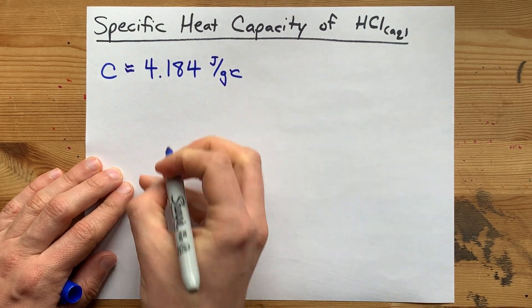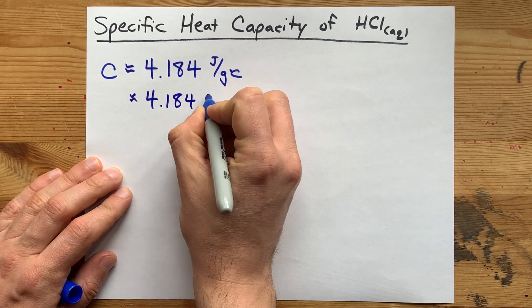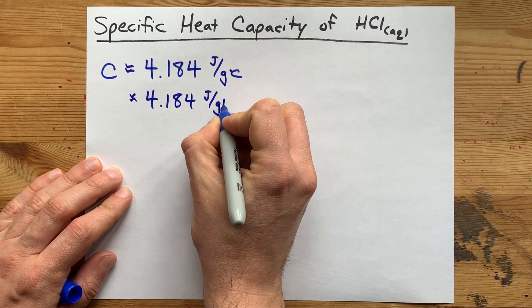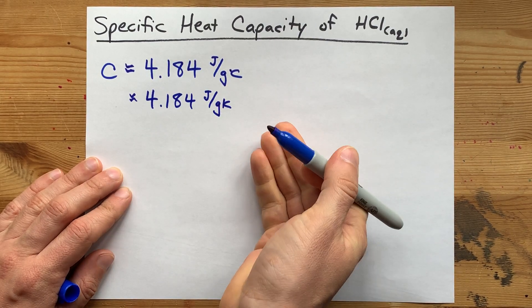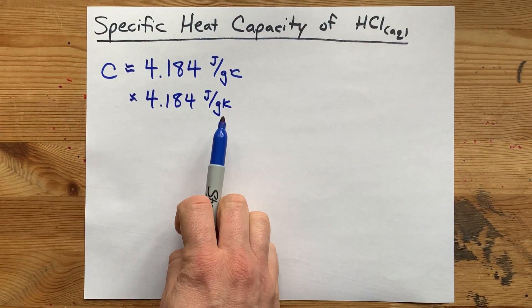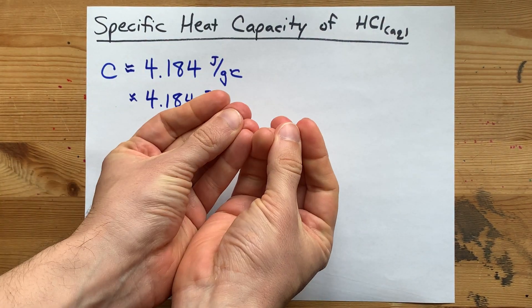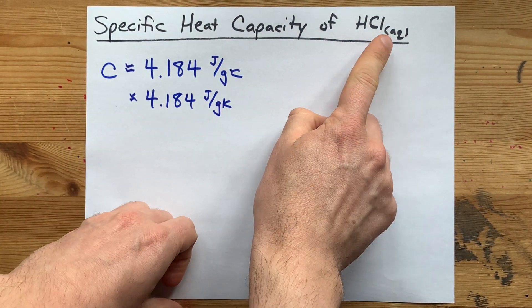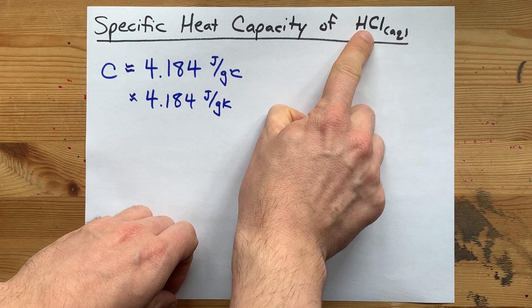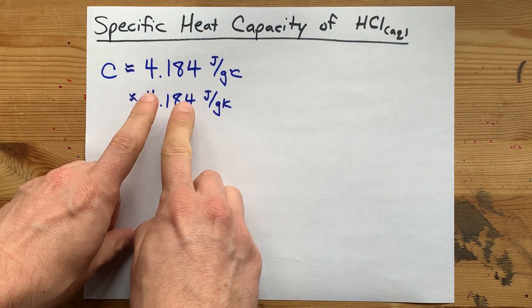Maybe if you're an American, you don't use degree Celsius. You might use 4.184 joules per gram Kelvin. It's the same number because each degree Celsius is the same size as a Kelvin. But in any case, the idea is that you're going to say the heat capacity of your aqueous hydrochloric acid is approximately the same as for pure water.